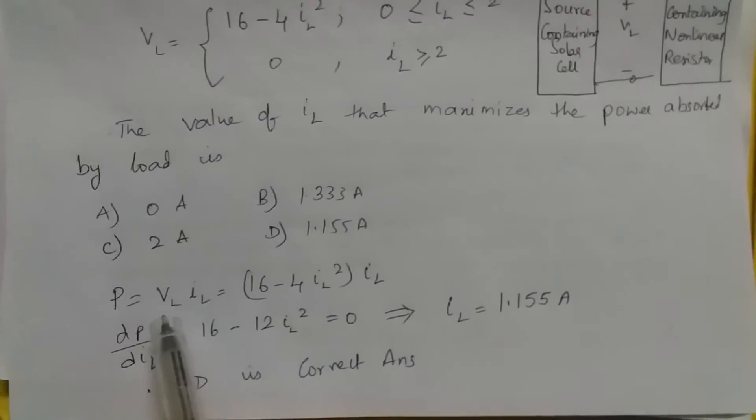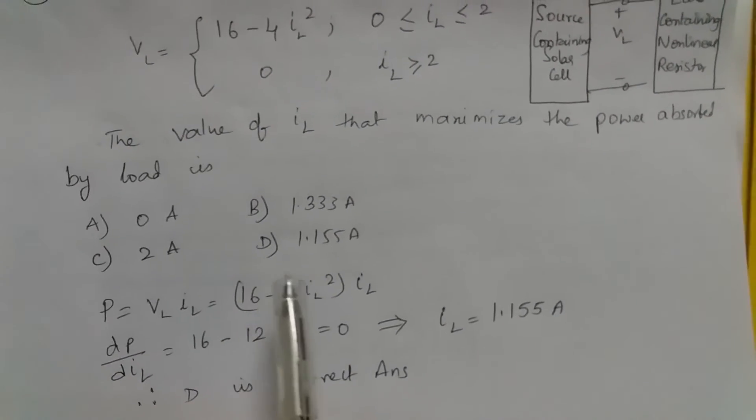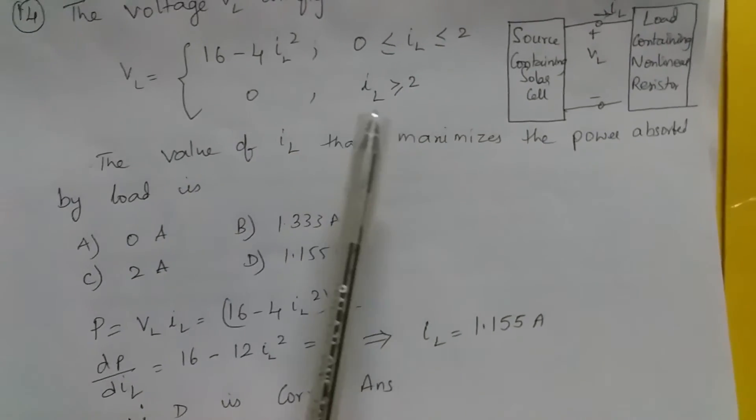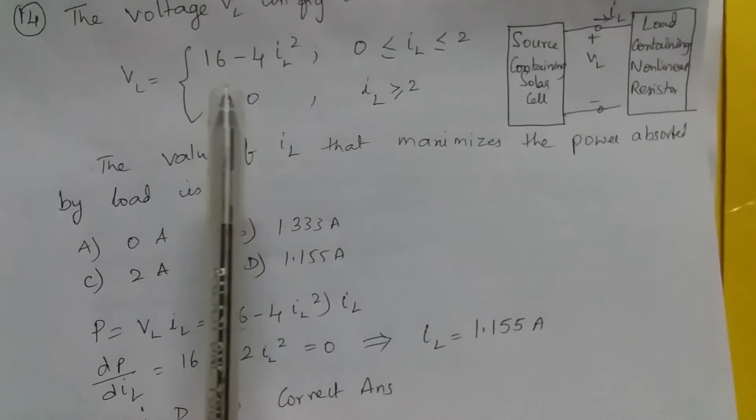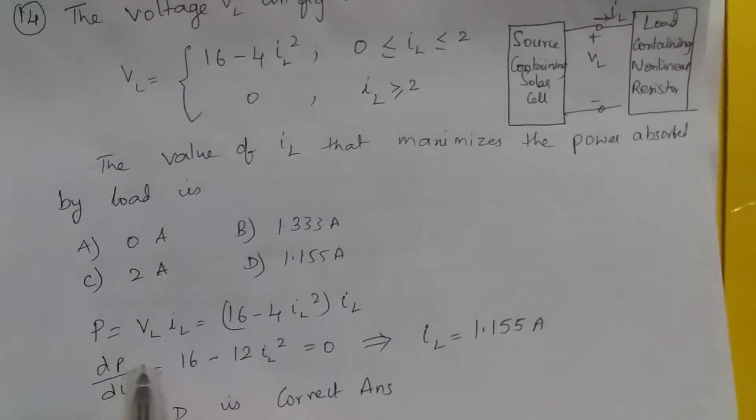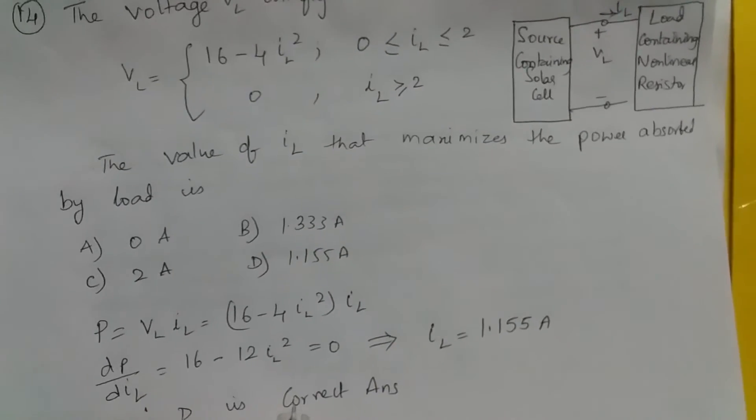What is power? VL times IL. So 16 minus 4IL squared times IL. This is 0 when IL is greater than or equals to 2. 16 minus 4IL squared times IL - how do you calculate the maximum power?